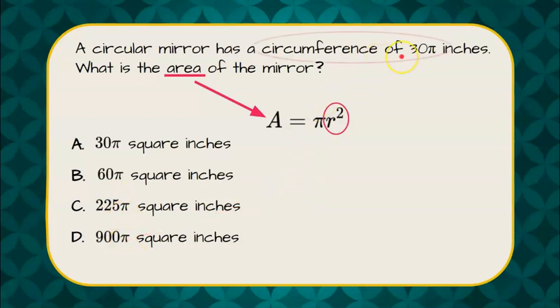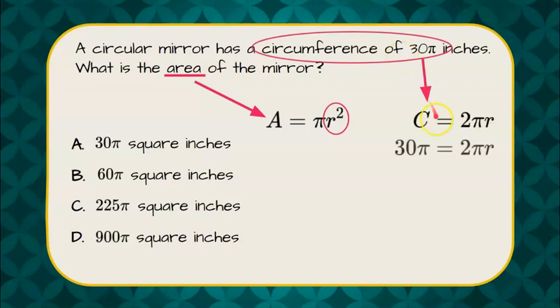We are told that the circumference is 30 pi. The circumference of a circle is 2 times pi times r, so we're going to use that the circumference is 30 pi to solve for the radius.